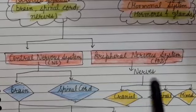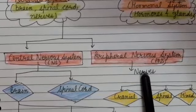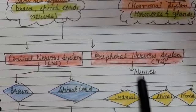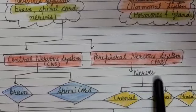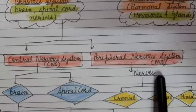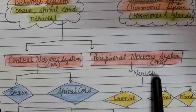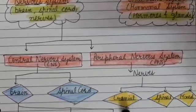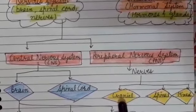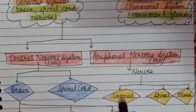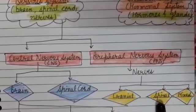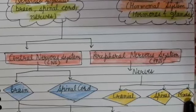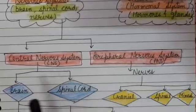These Nerves we studied in our earlier classes. Nerves are bundles of Neurons. Their types are: Cranial Nerves, Spinal Nerves, and Mixed Nerves.